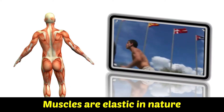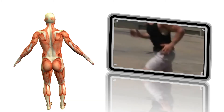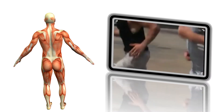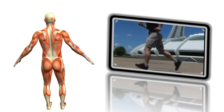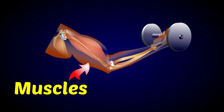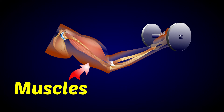What are muscles? Muscles are elastic in nature. They are capable of contraction in response to the stimulus from the central nervous system. The muscle cells function like biological machines that convert chemical energy into mechanical work.